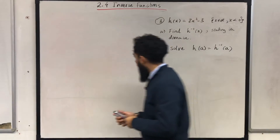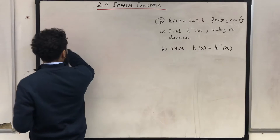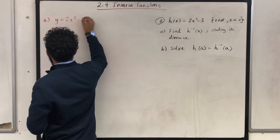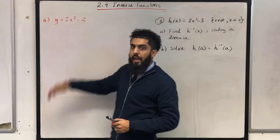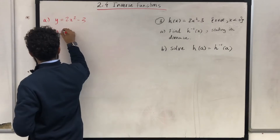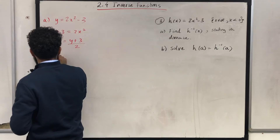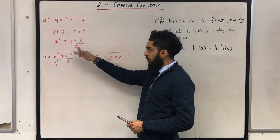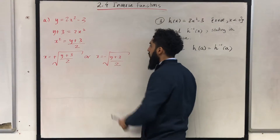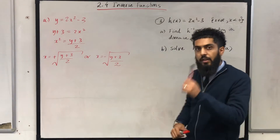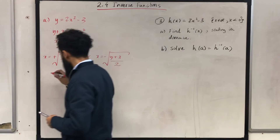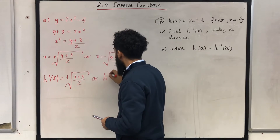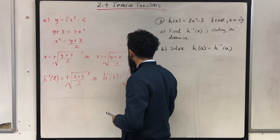Let's have a look at part A. We want to find the inverse function of h of x. We need to let y equal 2x squared minus 3. What I need to do next is make x the subject. So I have that x is equal to the positive square root of y plus 3 all over 2, or x is equal to the negative square root of y plus 3 all over 2. Therefore, the inverse function of h of x can be the positive square root of x plus 3 all over 2, or the negative square root of x plus 3 all over 2.